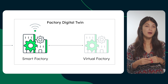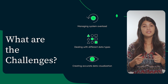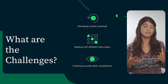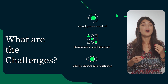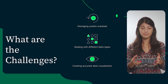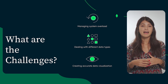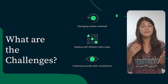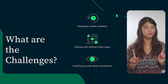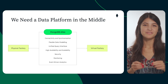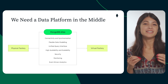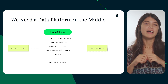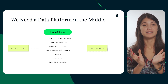However, setting up a virtual factory for complex manufacturing isn't that simple. Challenges include managing systems overload, handling vast amounts of data from physical factories, and creating visualizations. The virtual factory must also adapt to changes in the physical factory over time. Given these challenges, having a data platform that can contextualize all the data coming in from the physical factory and feed that to the virtual factory and vice versa is crucial. That is where MongoDB Atlas, our developer data platform, comes in — providing synchronization capabilities between physical and virtual worlds, enabling flexible data modeling, and providing access to the data via a unified query interface, as seen here.